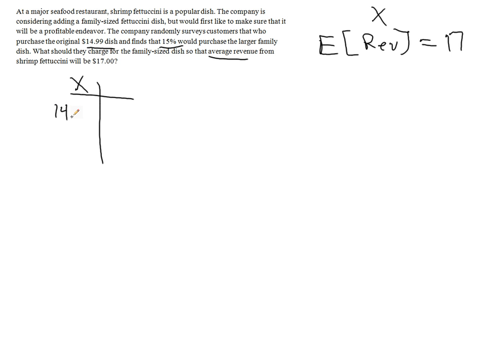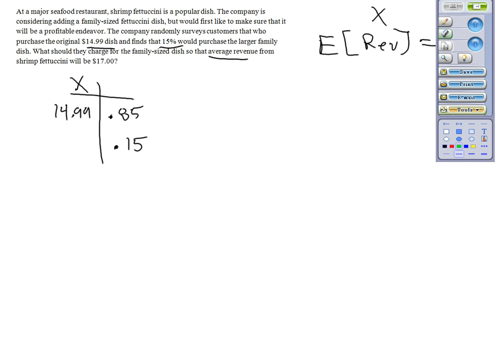They'll earn $14.99 or they'll earn something else, and we don't know what that something else should be. But we know that 85% of those who purchase this dish will stick with the $14.99 dish, but the other 15% will go with the new price dish. We need to really know what should that value be. So since I've used X already, let me call this P for price.